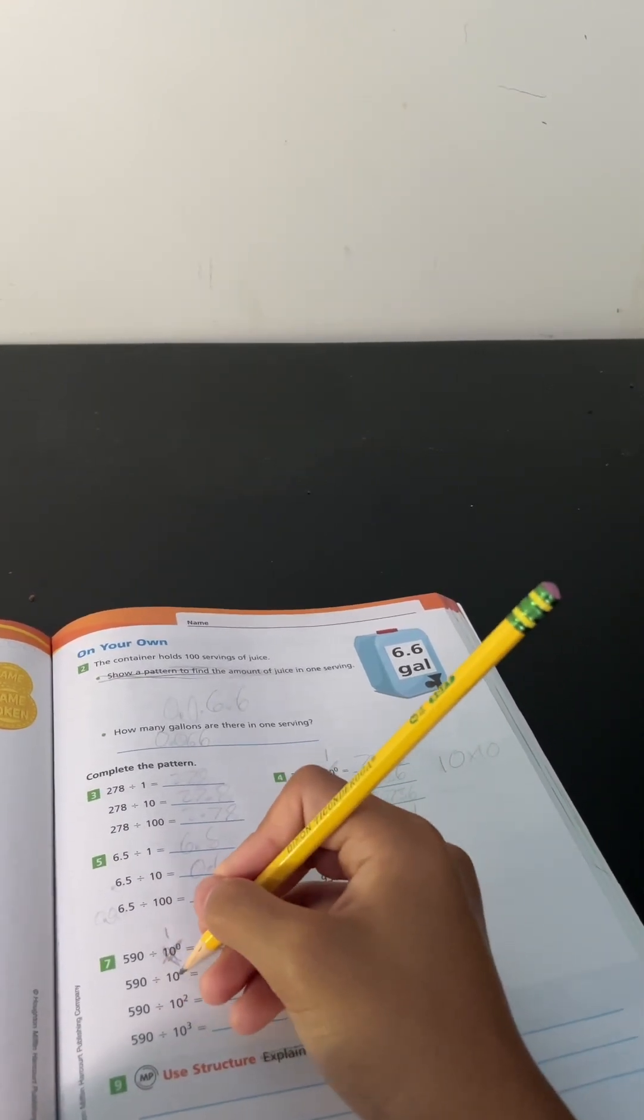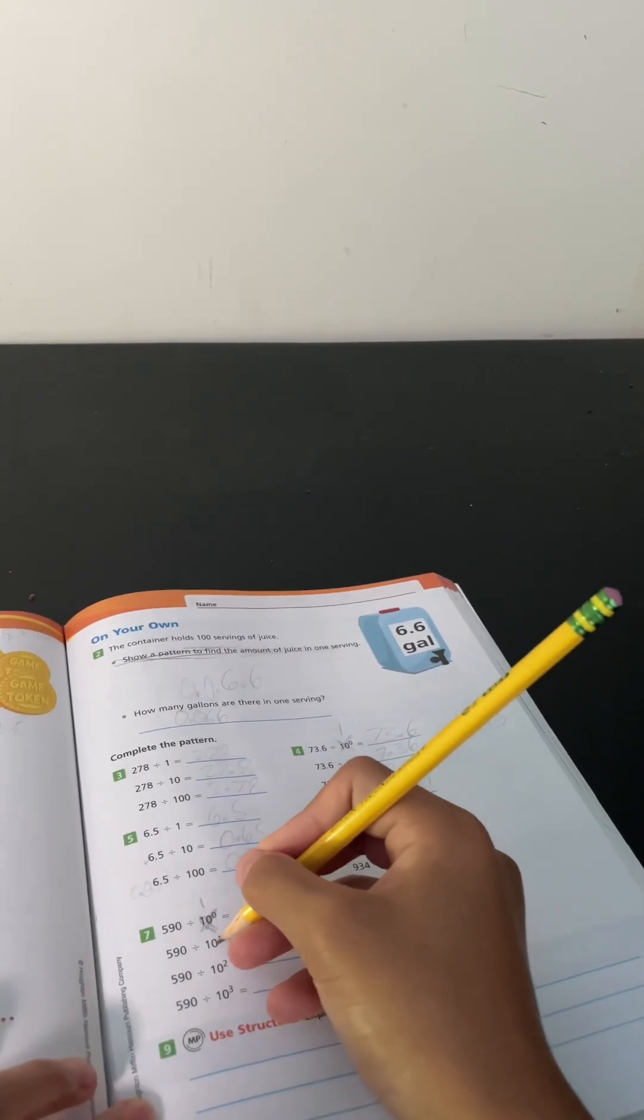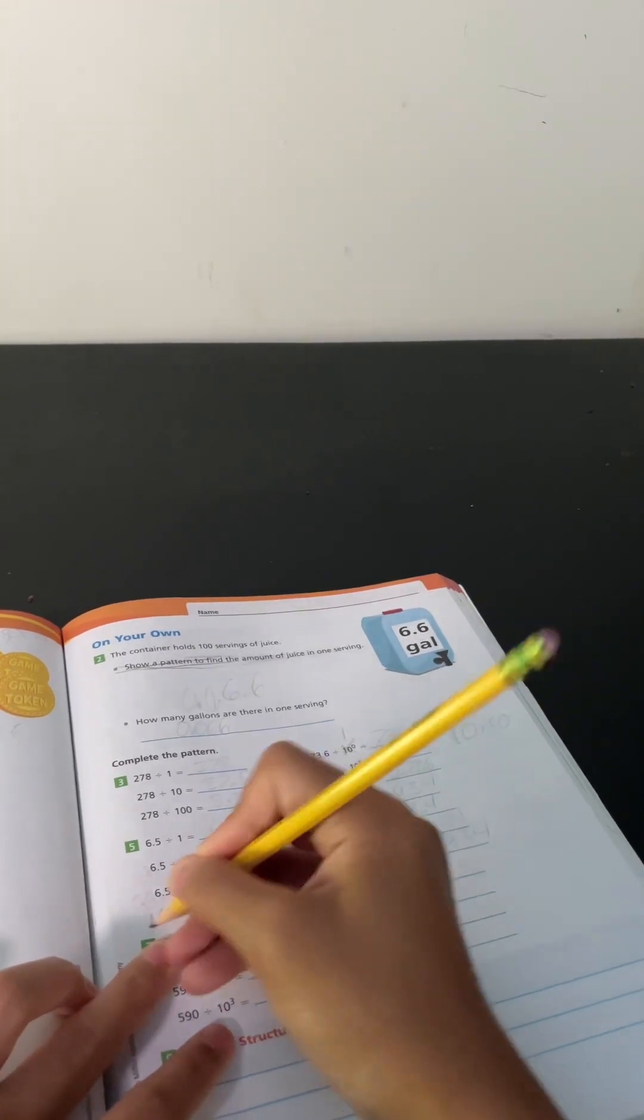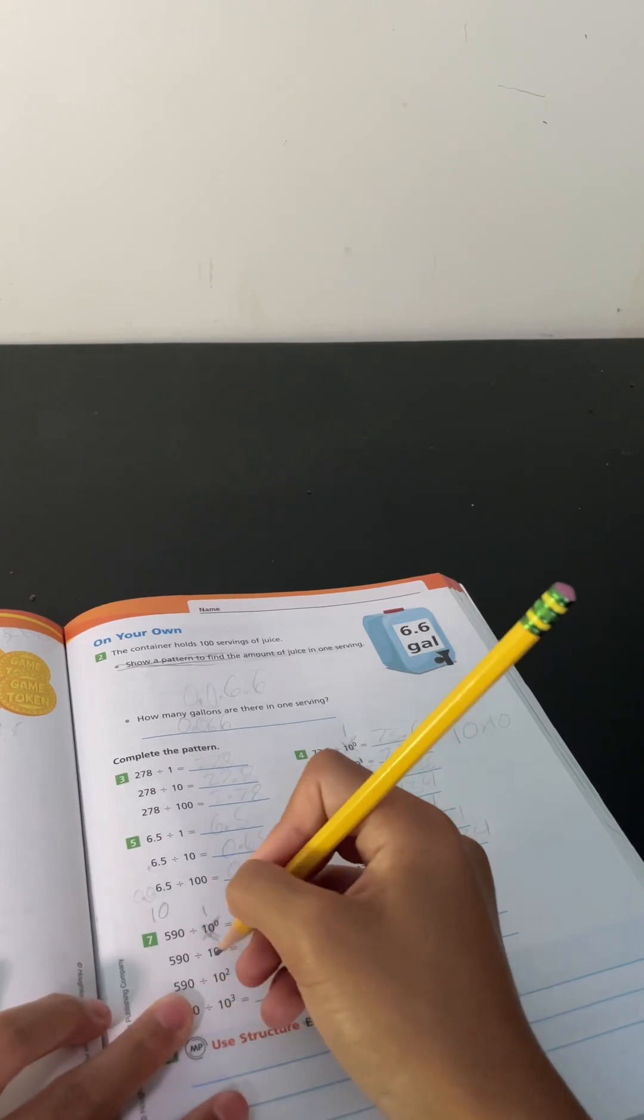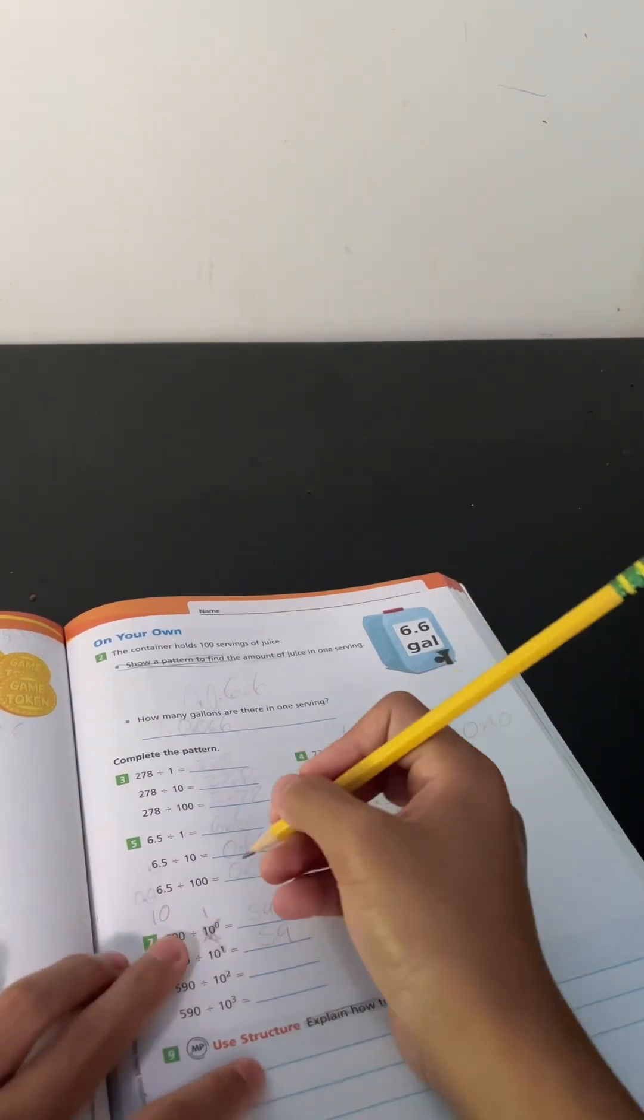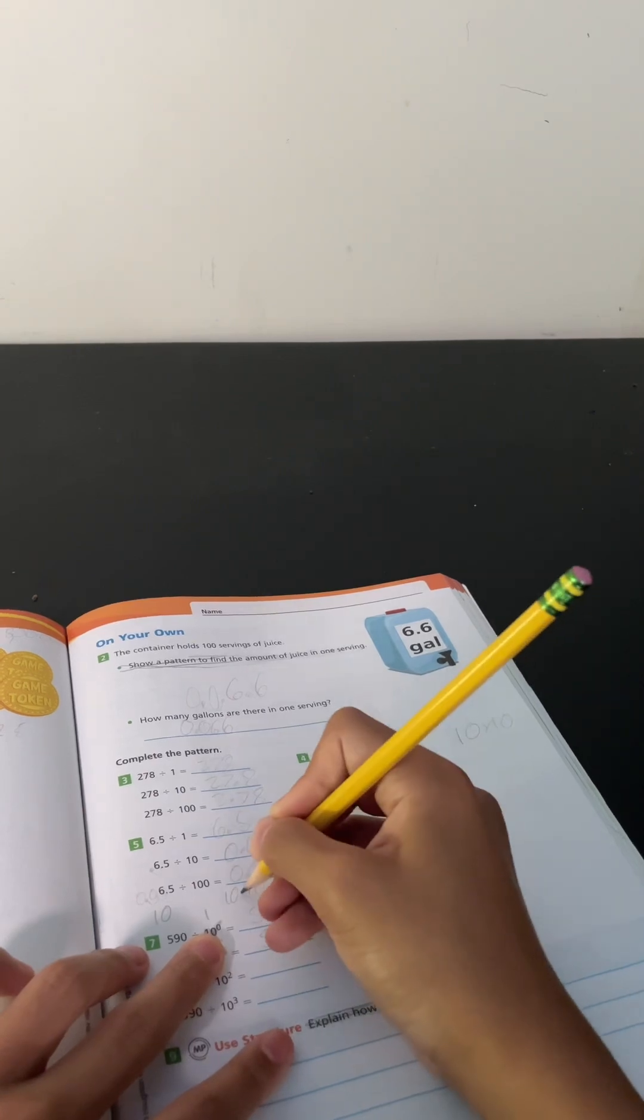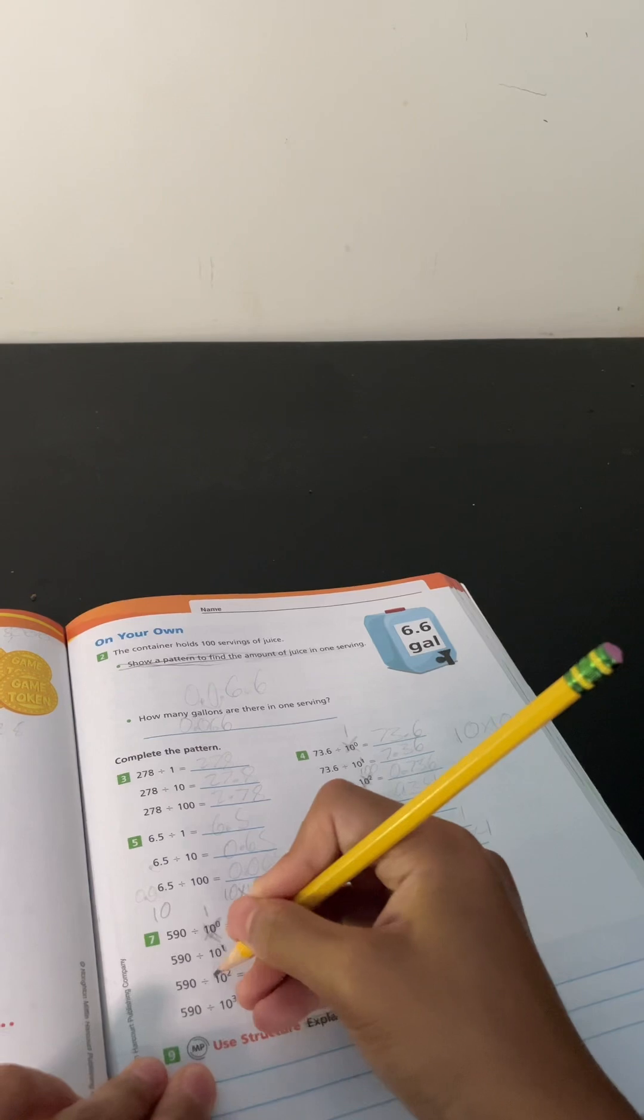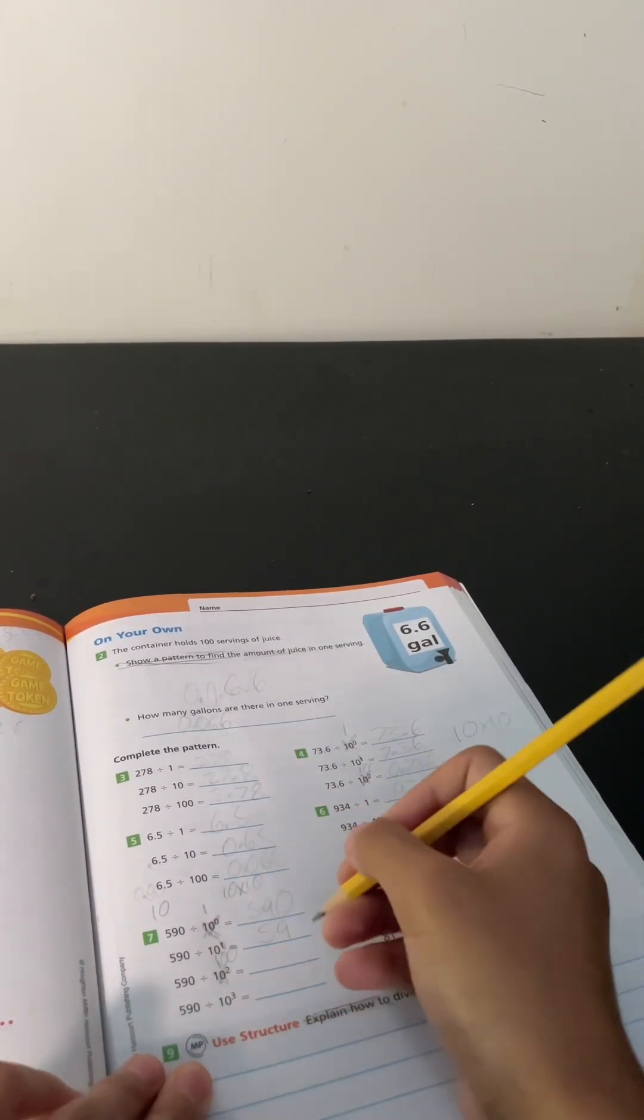590 divided by 10 to the power of 1. 10 to the power of 1 equals 10, so 590 divided by 10 equals 59. 590 divided by 10 to the power of 2. 10 to the power of 2 is 10 times 10, which equals 100. So 590 divided by 100 equals 5.9.